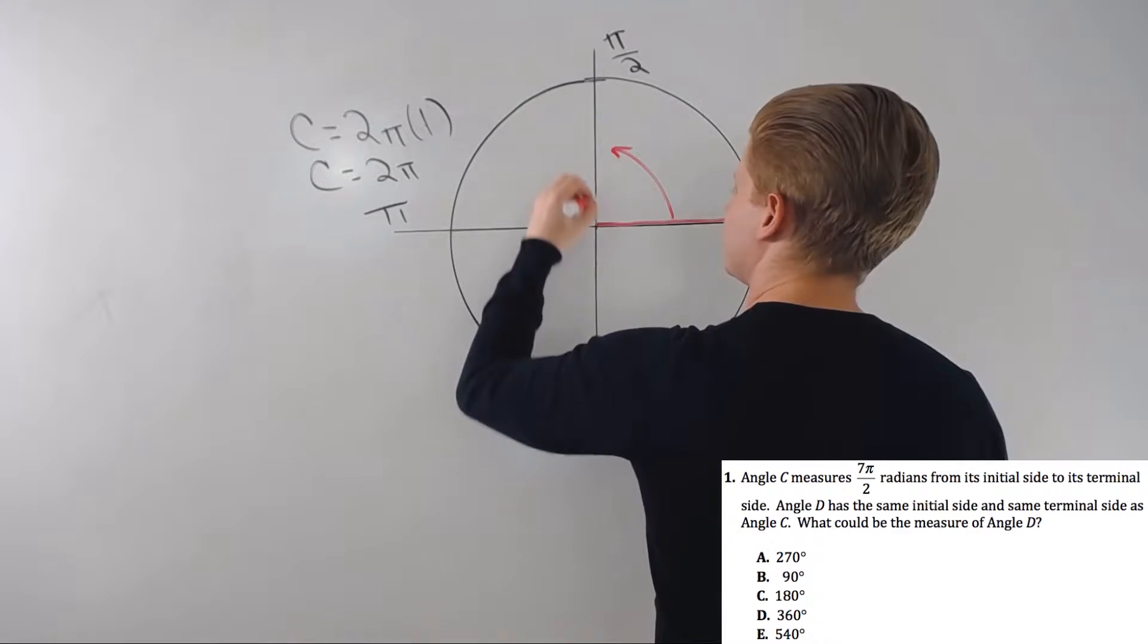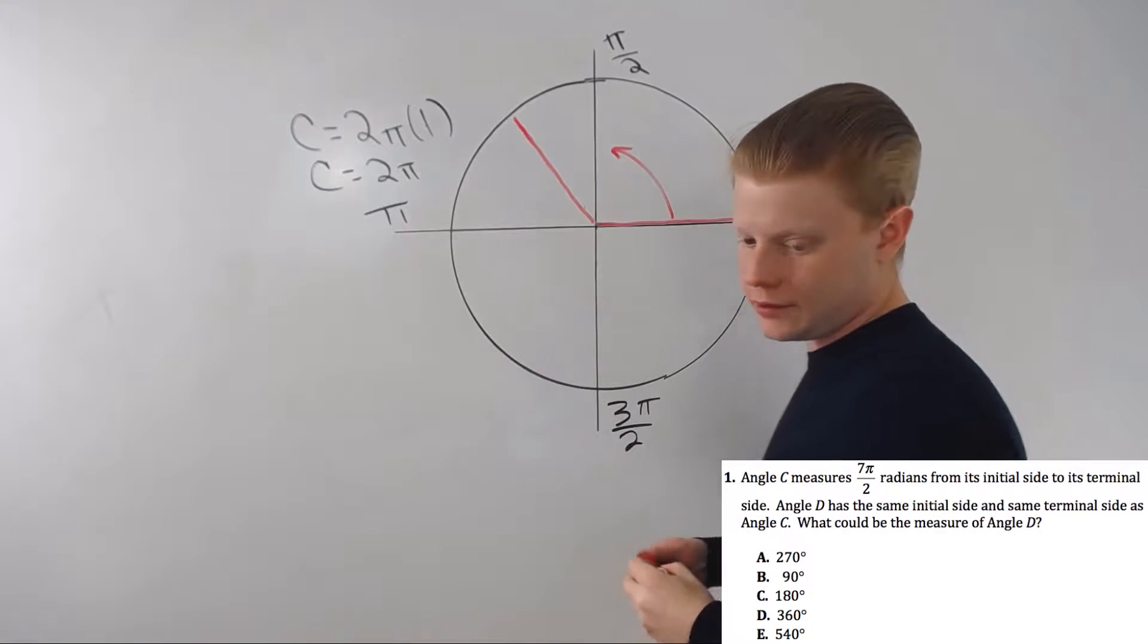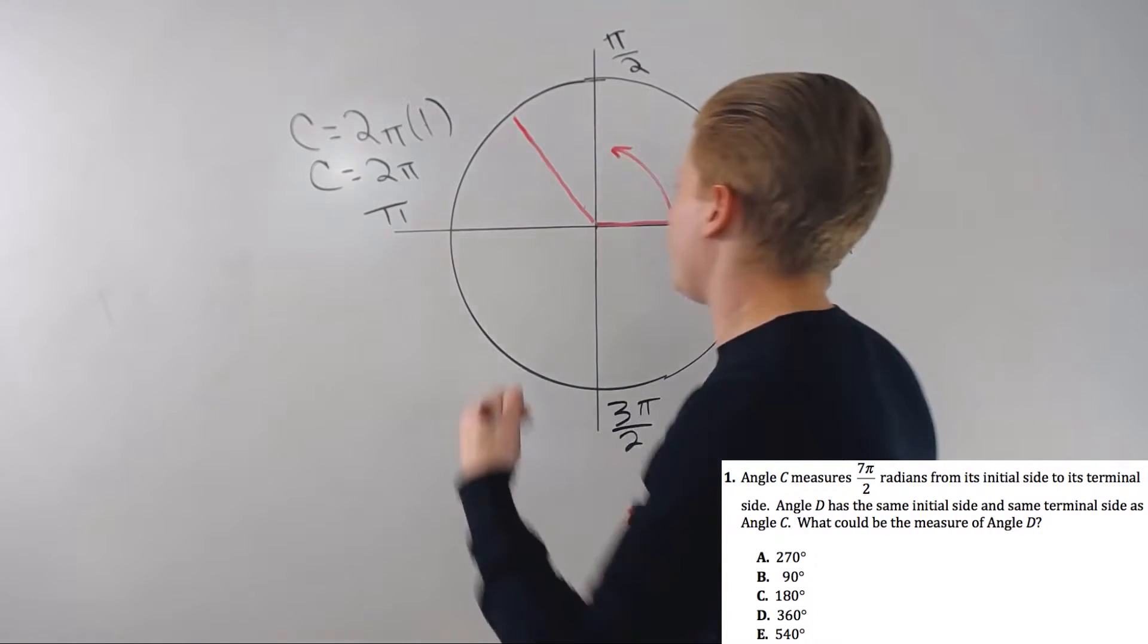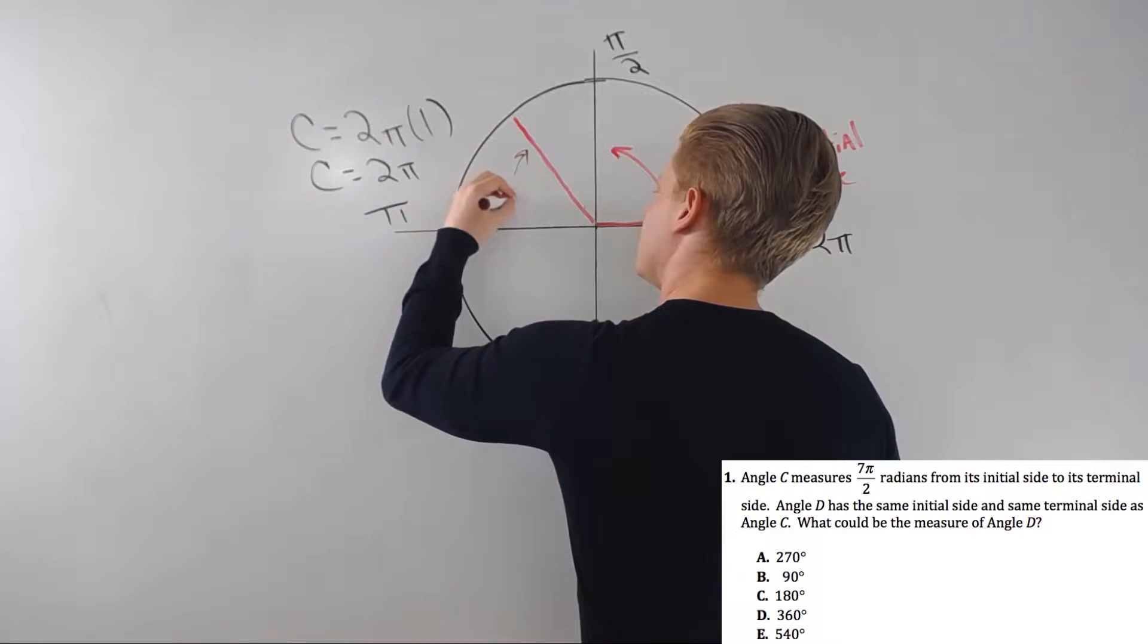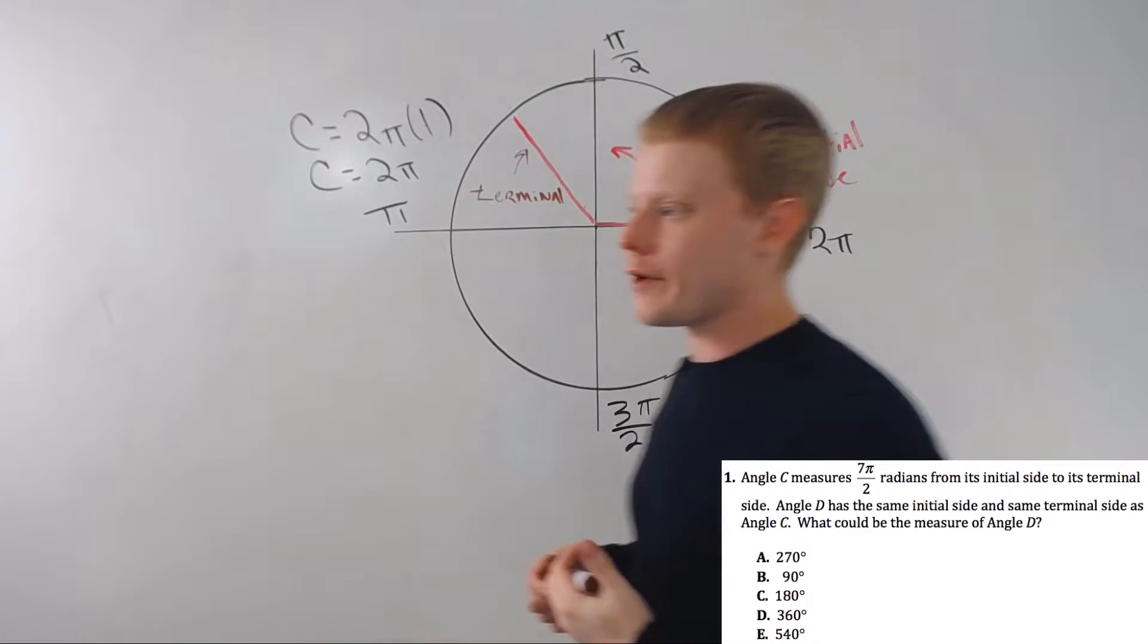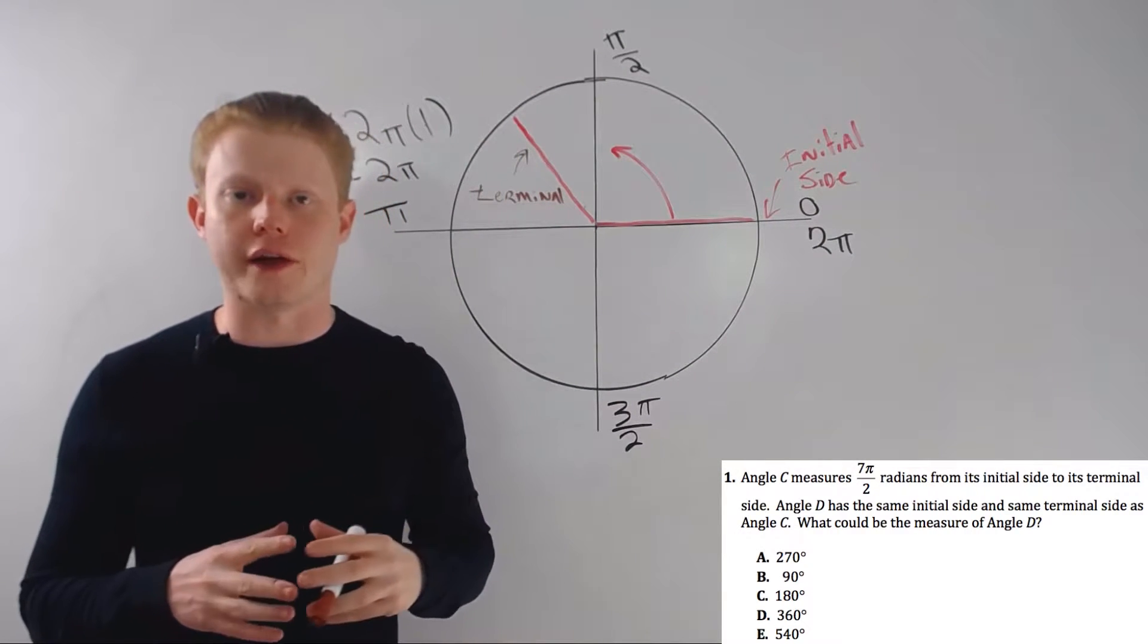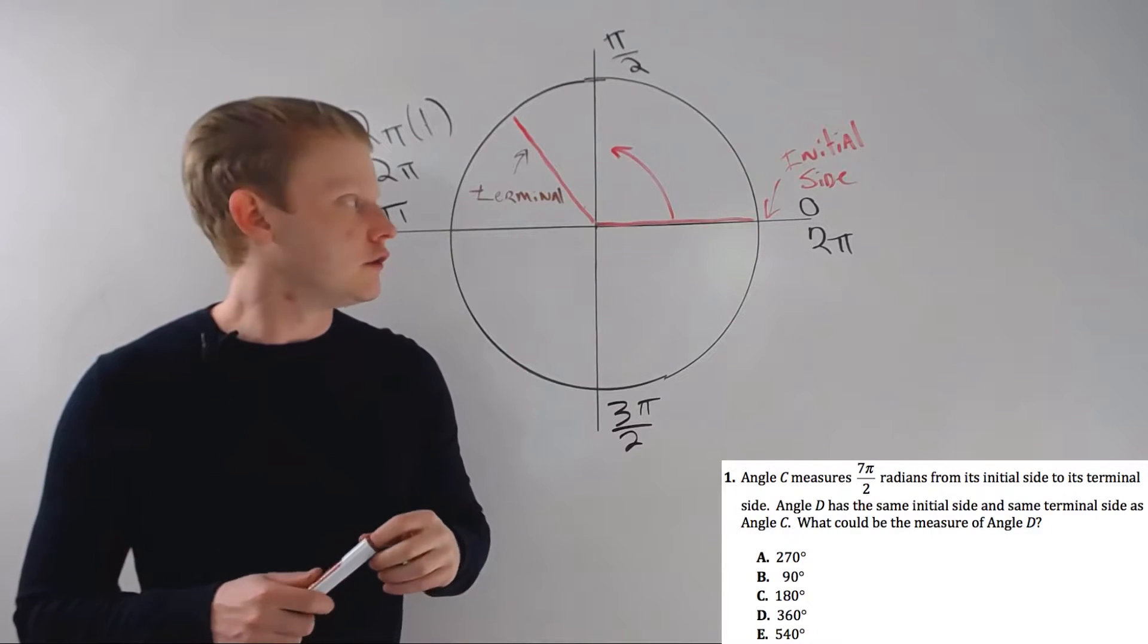Wherever we decide to land, let's say we land here. Well, this red is about to die, isn't it? Let's change colors. And that's called the terminal side. Initial and terminal. I'm not too worried about the vocabulary. I don't feel like you need to memorize it. It's a little self-explanatory. I just want you to be okay with it when you see it.